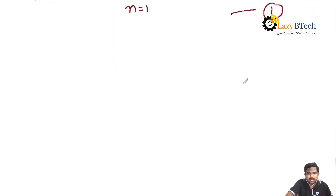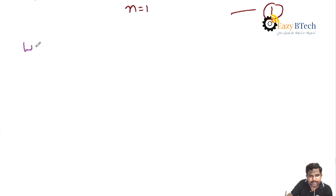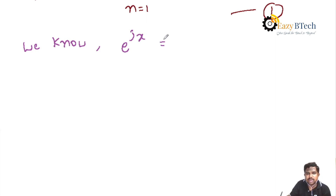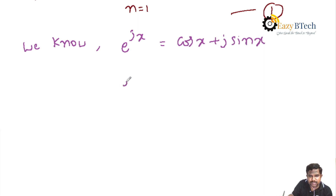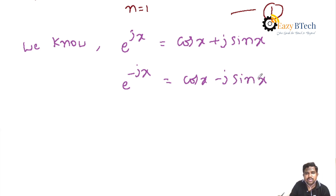From the basics of exponential terms, we know that e^(jx) = cos x + j·sin x. Similarly, e^(-jx) = cos x − j·sin x. You must remember both of these formulas, as they are the basic equations helpful to find out the complex Fourier series.